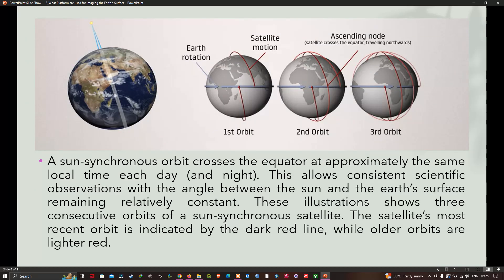This slide shows a sun synchronous orbit in a little more detail, this time for a satellite in an ascending node configuration. As seen, the first orbit comes up over the Indian Ocean, the next orbit over central Africa. The sun synchronous orbit crosses the equator at approximately the same local time each day. This allows consistent scientific observation with the angle between the sun and the earth's surface remaining relatively constant. This illustration shows three consecutive orbits of the sun synchronous satellite. The satellite's most recent orbit is indicated by the dark red line while the older orbits are in lighter reds.